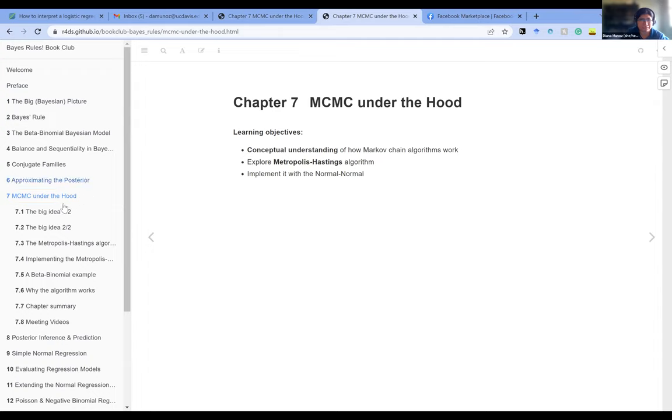Okay, so Chapter 7 went into the Markov Chain Monte Carlo algorithms under the hood, understanding what's going on within the black box instead of just throwing numbers at the models. The learning objectives for this chapter were to have a conceptual understanding of how the Markov chain algorithms work, explore the Metropolis-Hastings algorithm, which is what the Gibbs sampler and Hamiltonian algorithm kind of originate from, and learn how to implement this with a normal-normal model.